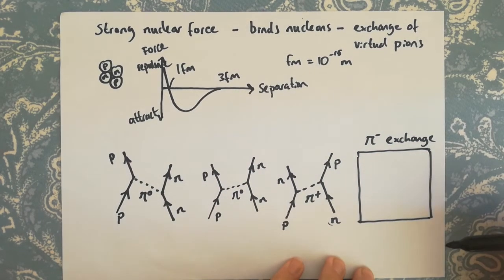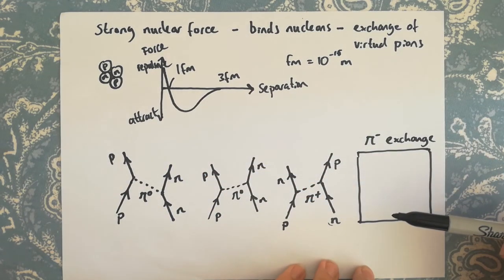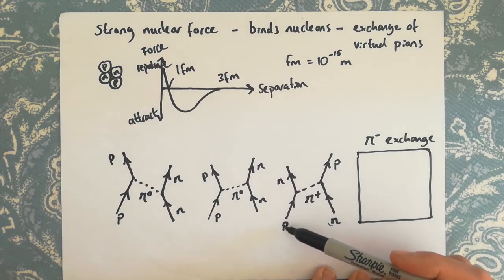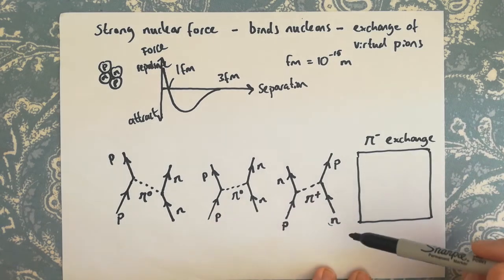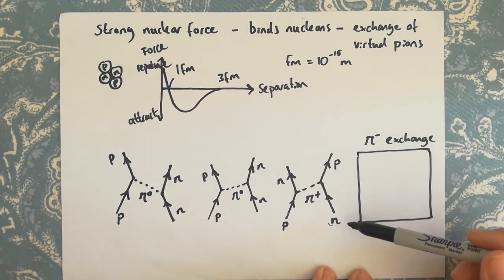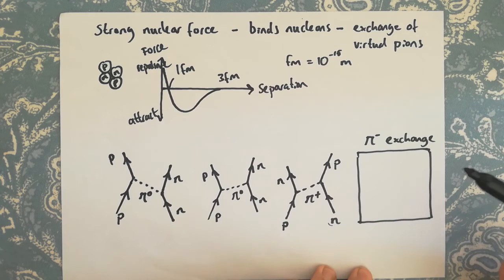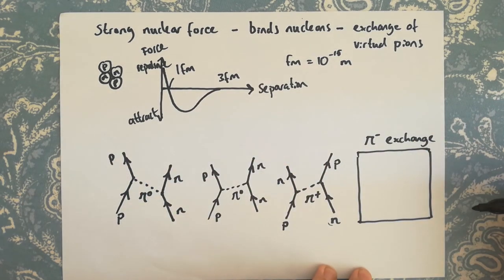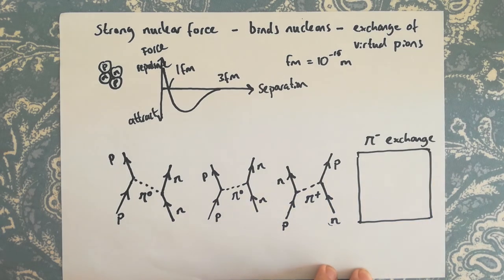I'll leave it as an exercise for you to draw a Feynman diagram involving the exchange of a negative pion between a proton and a neutron. There are other combinations we haven't drawn here — for example, two neutrons attracting or two protons attracting. See how many more you can come up with. That's it!